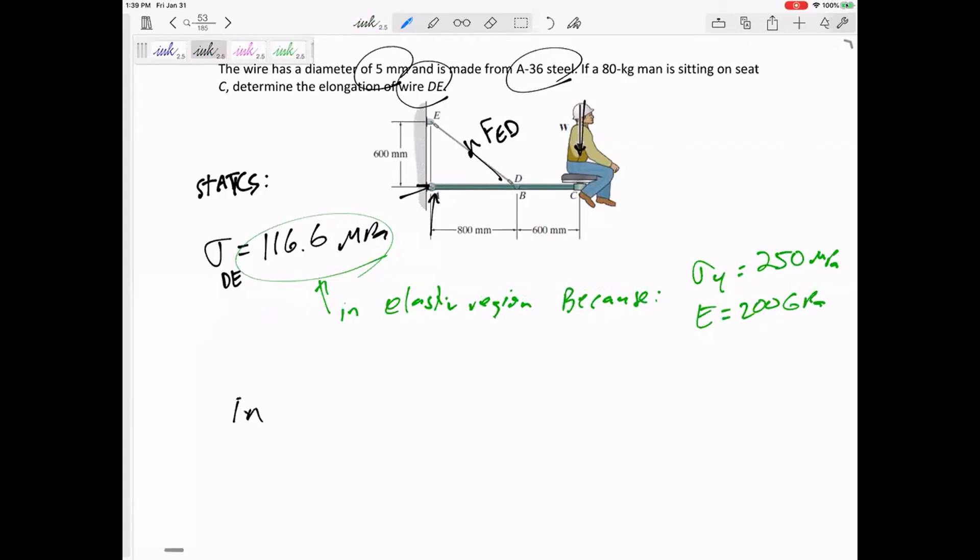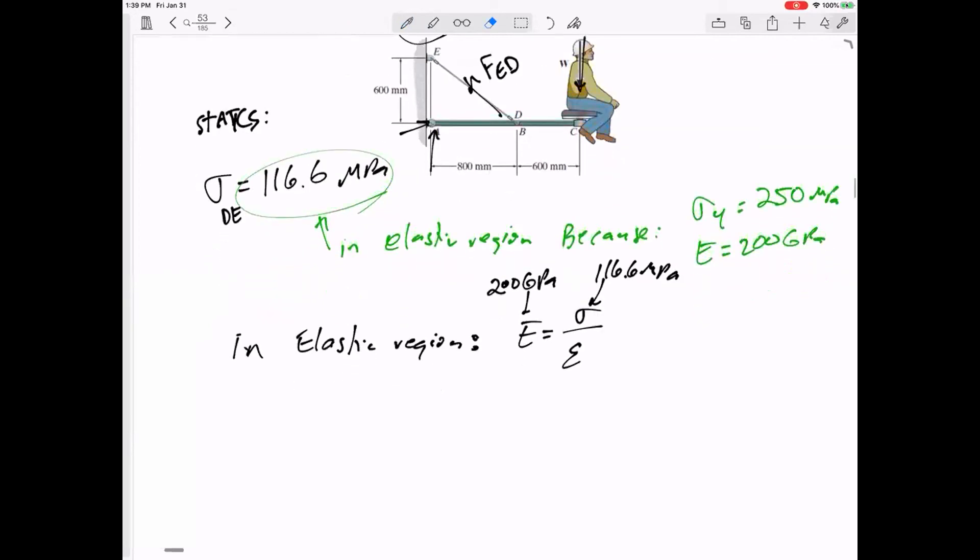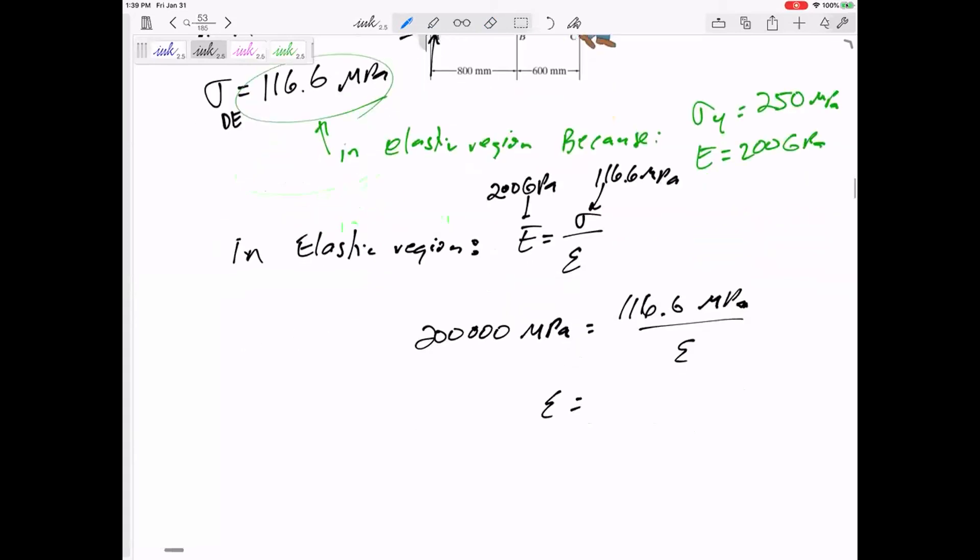Also from the back of the book, I would just read off the E is 200 GPa. And so in the elastic region, E is stress over strain. And so if I know this is 200, let me be careful though. This is 200 GPa. This is 116.6 MPa. So y'all know that GPa is 1,000 times more than MPa. So this is what I'm going to do right here. 200,000 MPa equals 116.6 MPa over strain.